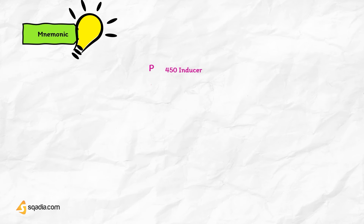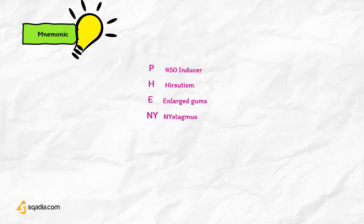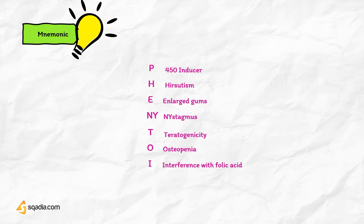By spelling out the name of the drug, you can easily memorize its effects: P for P450 enzyme, H for hirsutism, E for enlarged gum, NY for nystagmus, T for teratogenicity, O for osteopenia, I for interference with folic acid, N for neuropathy.